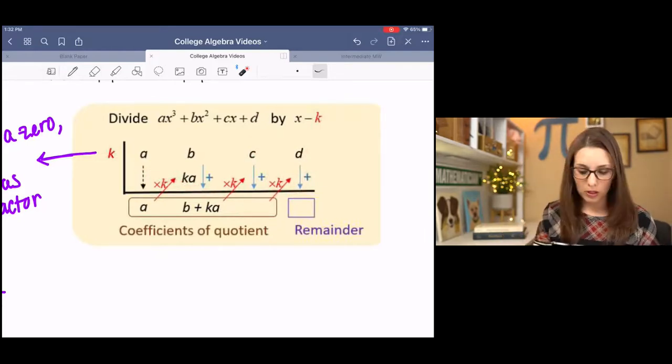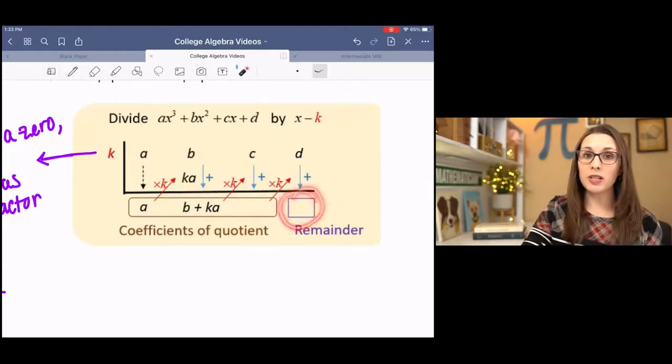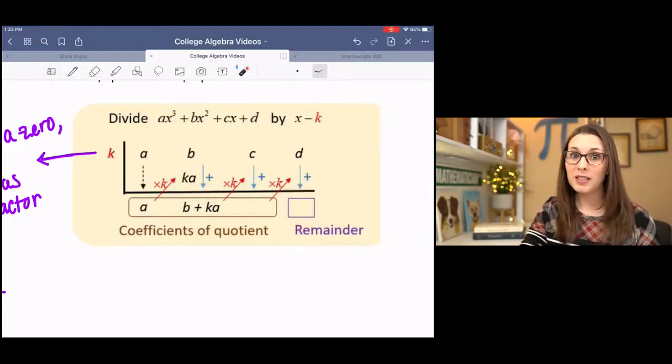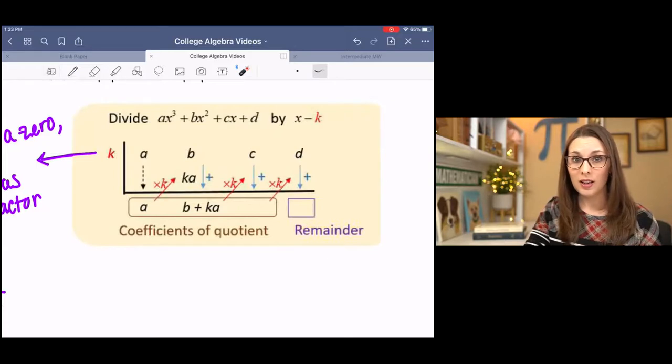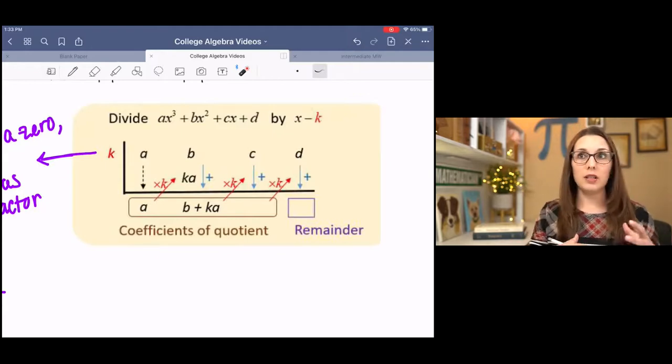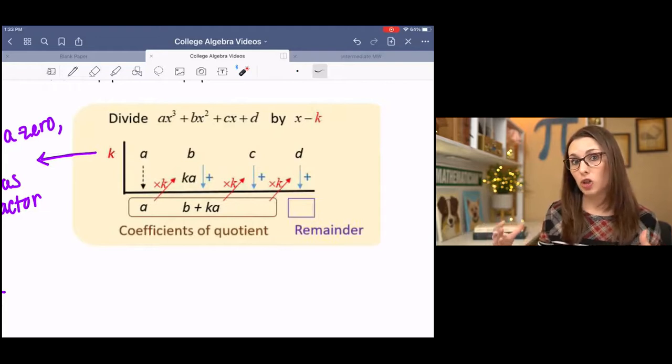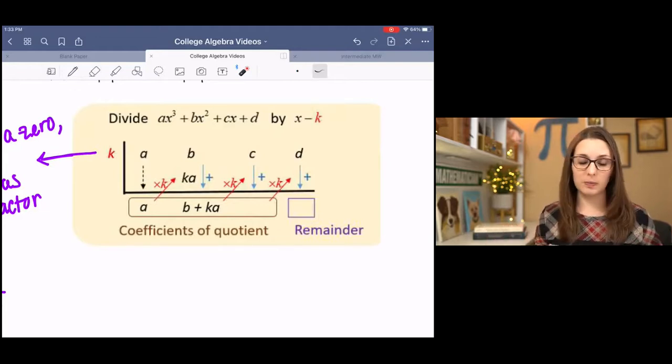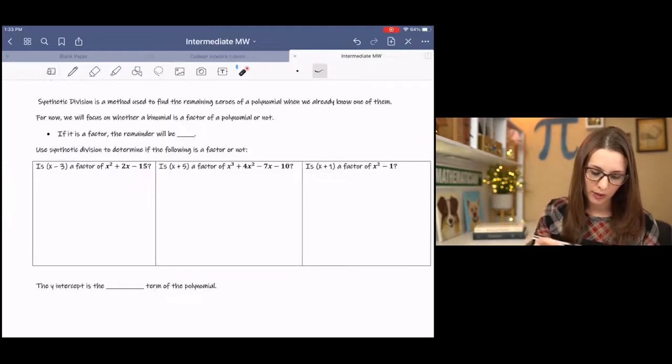But it's really pretty cool. And if the remainder is zero, then it divides evenly, which indicates that it is a solution, it is a factor. Like if 6 divides by 2 evenly, then 2 is a factor of 6. So let's go to an example here.